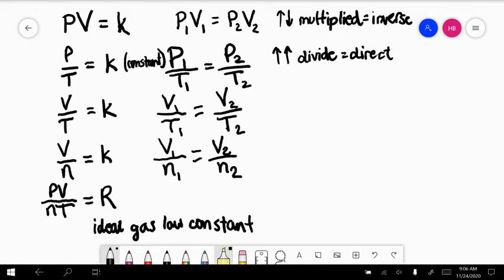So it will always equal a constant. In this case, for us, it's going to be 0.08206. And now here's the key: it's liters atmospheres per moles K.